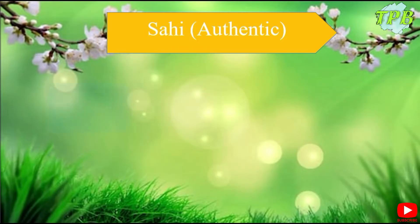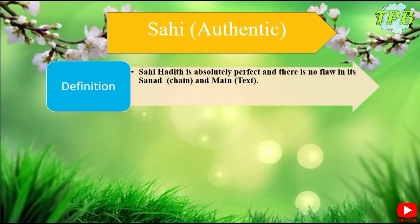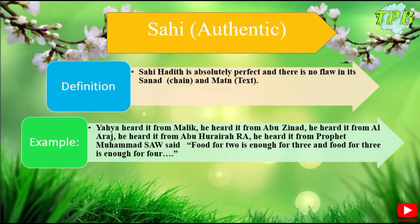First of all, Sahih Hadith, that is known as authentic Hadith. This type of Hadith is absolutely perfect and there is no flaw in its Sanad — that is the chain of narrators — and the Matan, the text or body of the Hadith. Example: Yahya heard it from Malik, Malik heard it from Abu Zinaad, Abu Zinaad heard it from Al-Araj, Al-Araj heard it from Abu Huraira, and Abu Huraira heard it from Prophet Muhammad (PBUH) who said: food for two is enough for three.